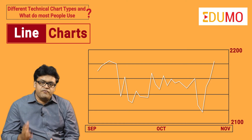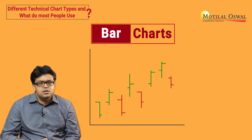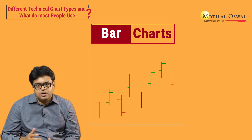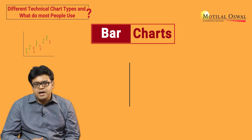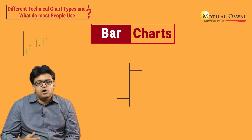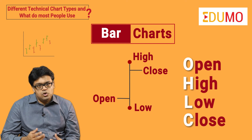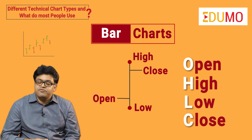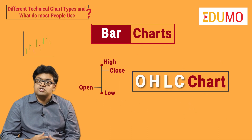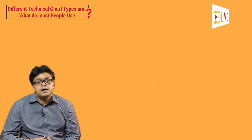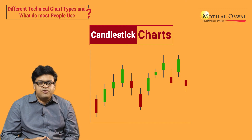In the chart shown, you can see that the price oscillates between 2100 and 2200 from September to November. A bar chart is almost the same as a line chart but much more informative. Each marking on a bar chart is in the shape of a vertical line with two horizontal lines protruding out on either side. A chart which has open, high, low, and close data sets in the form of a bar is known as a bar chart, also called an OHLC chart.